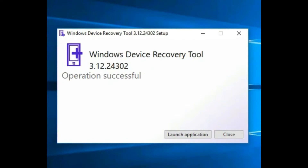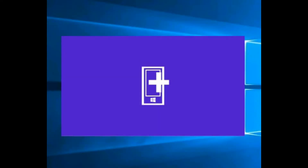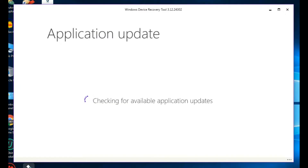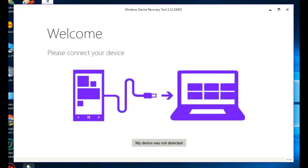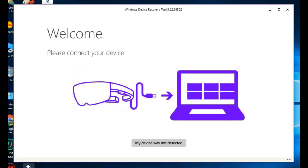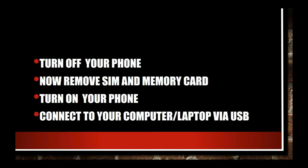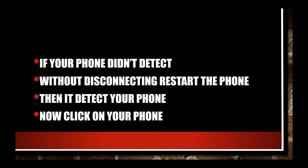Now click on 'Launch Application'. It is launching and will check for updates. Now it shows your device detection. Turn off your phone, remove SIM and memory card, then turn on and connect your phone via USB cable to your computer or laptop.